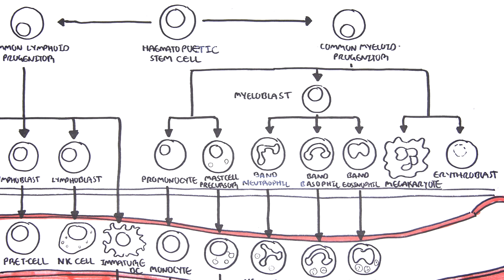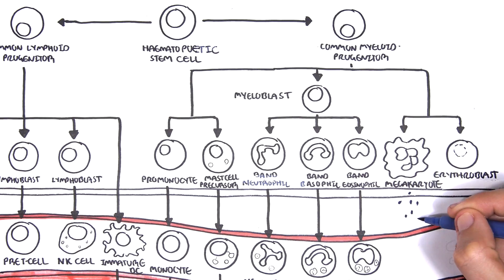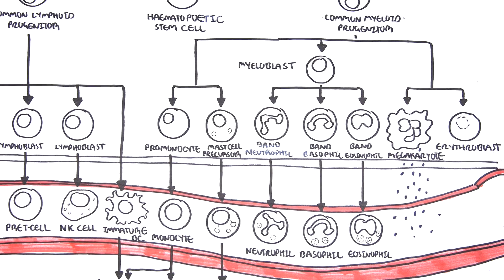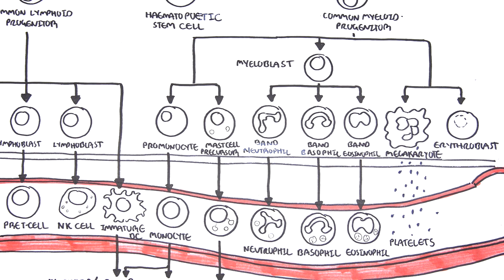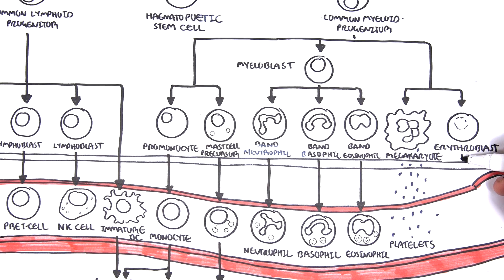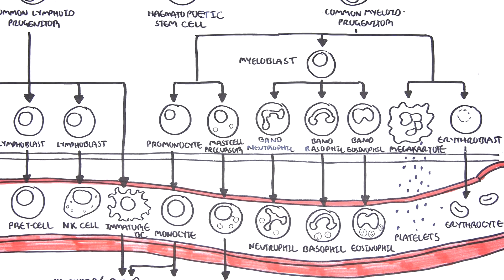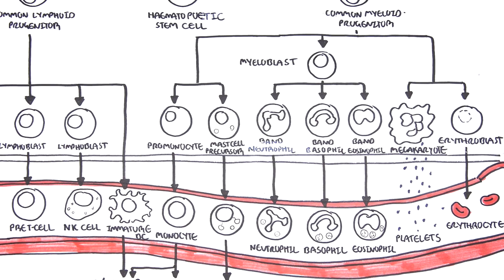Megakaryocytes are normally present in the bone marrow, not in the circulating blood, but they give rise to the platelets found in the blood. Megakaryocytes rupture, releasing platelets into circulation, and platelets are very important in clotting. Erythroblasts are still nucleated red blood cells — meaning they have a nucleus — but once they enter circulation and mature, they become erythrocytes, which are anucleated. Erythrocytes are our red blood cells.